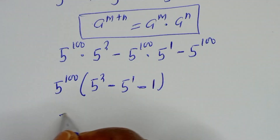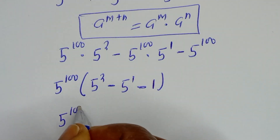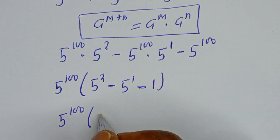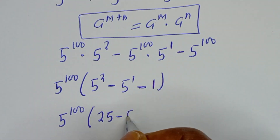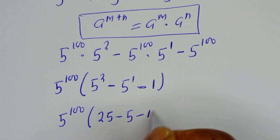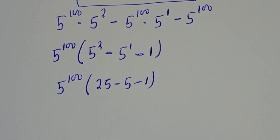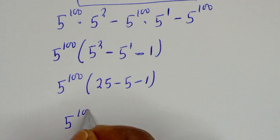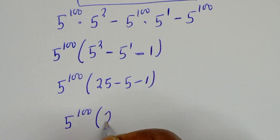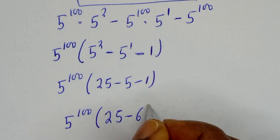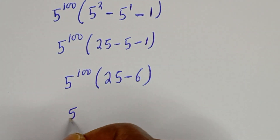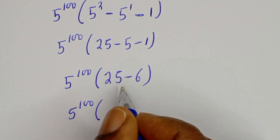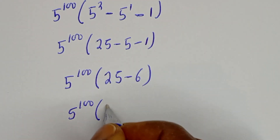Here is 5 to the power of 100 times bracket: 5 squared is 25, minus 5 to the power of 1 is 5, minus 1. That gives 5 to the power of 100 times bracket 25 minus 5 minus 1, which equals 5 to the power of 100 times 19.